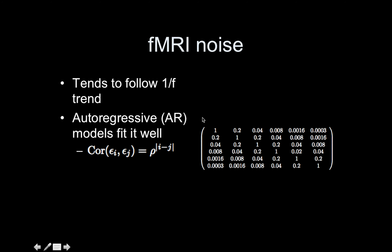Recall that fMRI noise follows a 1/f trend — a downhill slope in the power spectrum. Autoregressive (AR) models fit that type of noise pattern really well. The V matrix has ones on the diagonal (correlation of a time point with itself), the first off-diagonal represents lag-1 correlation between adjacent time points, and so on. For an AR model with lag-1 correlation of 0.2, lag-2 is 0.2 squared, lag-3 is 0.2 cubed — quickly diminishing toward zero as lag increases.